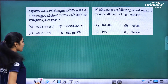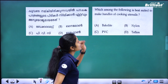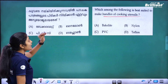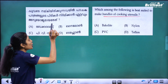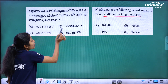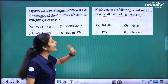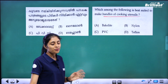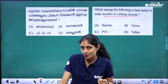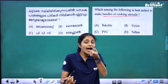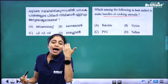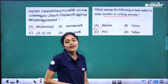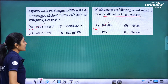Next question: which among the following is best suited to make handles of cooking utensils? You need a poor conductor of heat. A poor conductor is called Bakelite. So the answer is Bakelite.